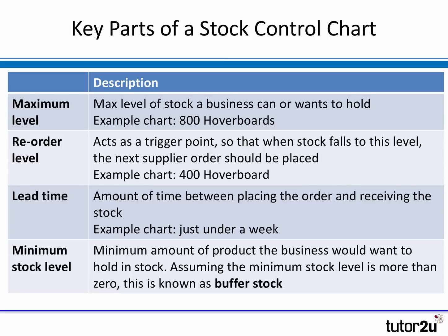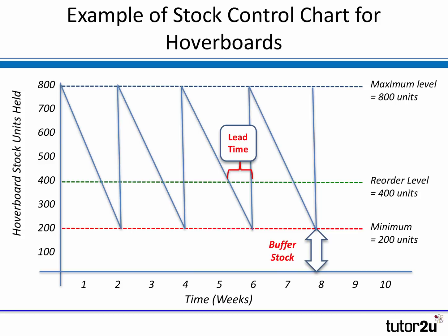So just to summarise, the key parts of the stock control chart: the maximum level is the maximum stock a business can hold — in our case, 800 hoverboards. The minimum stock level is the minimum amount we want to hold as a buffer — 200 units. We set a reorder level, which is the trigger point at which we place the next order with the supplier — on our chart, that was 400. And the lead time is the time between placing the order and receiving the stock — on our chart, just under one week.